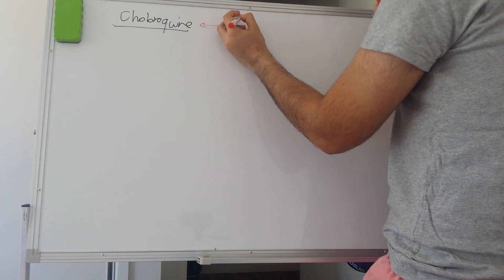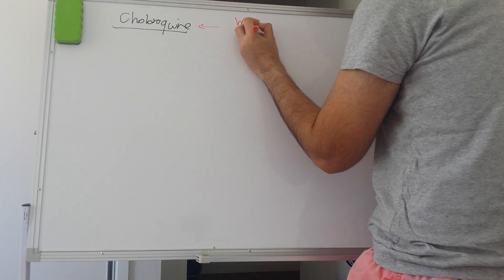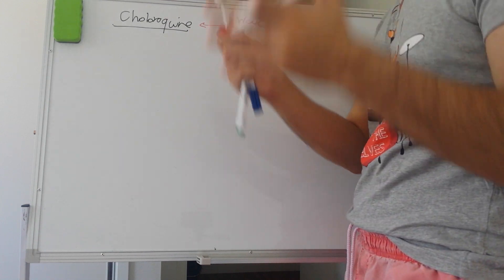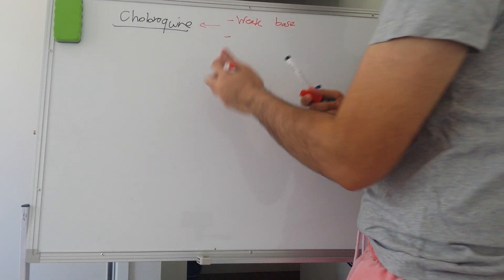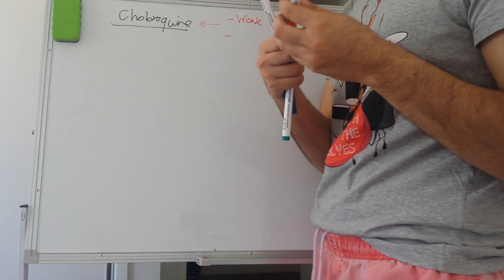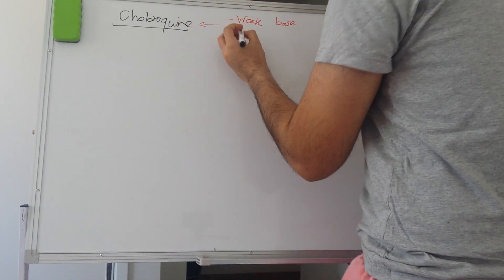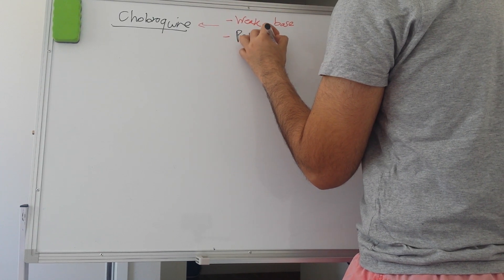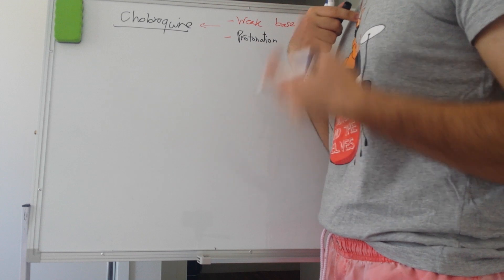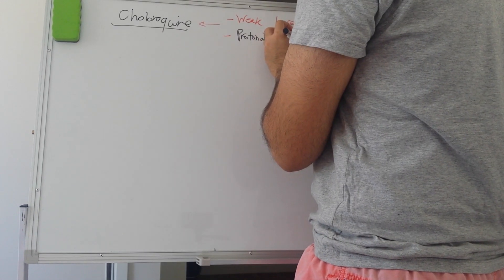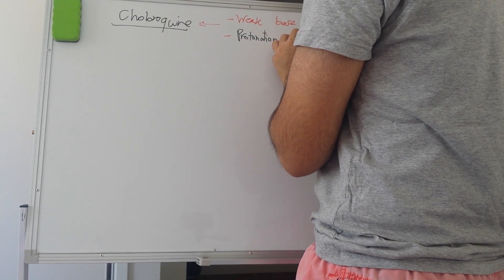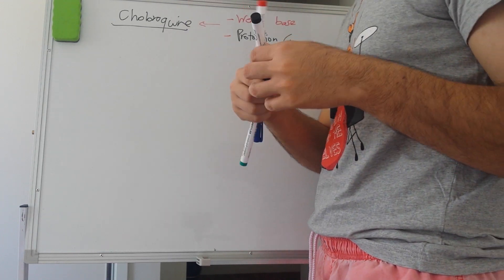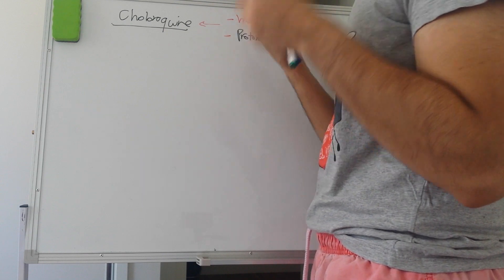The first key point is that chloroquine is a very weak base. What does weak base mean? When it is inside an acidic environment it can easily protonate — meaning it can easily gain a hydrogen ion. In an acidic environment the pH is pretty low, which means the concentration of hydrogen ions is pretty high.